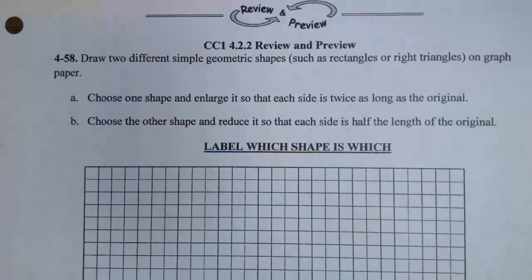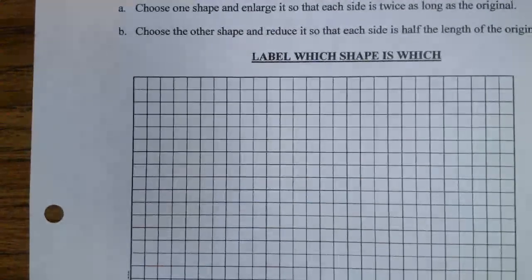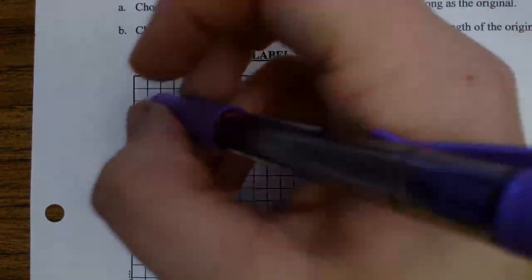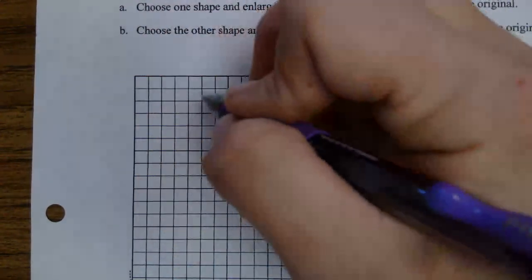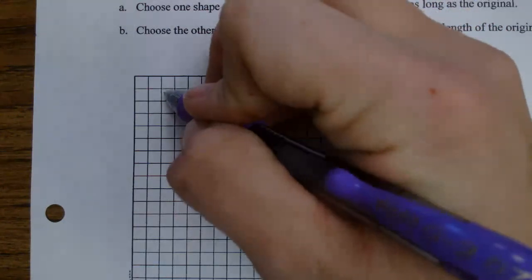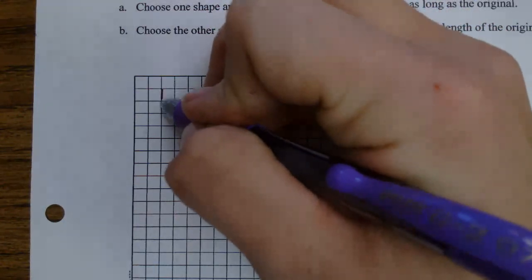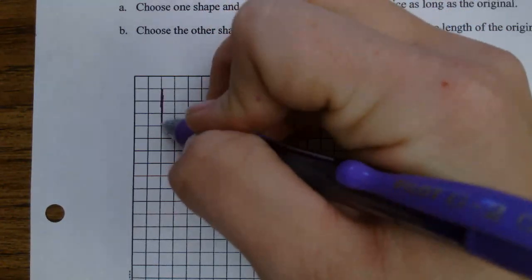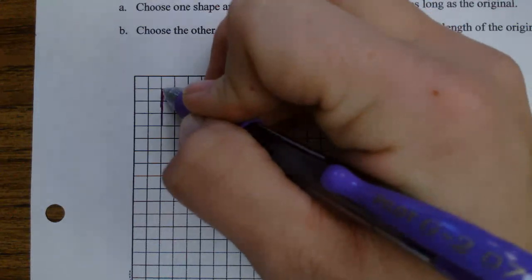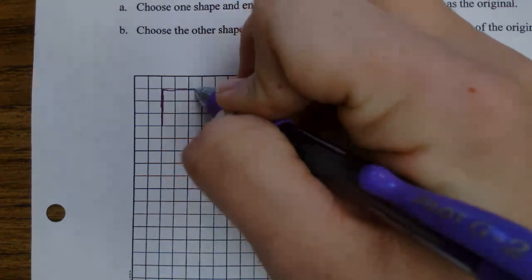Draw two different simple geometric shapes, such as rectangles or right triangles, on graph paper. I'm going to start with doing that. I'm using a purple pen so you can see it. I know my hand's a little large. I'm going to make a rectangle that is 3 by 4.